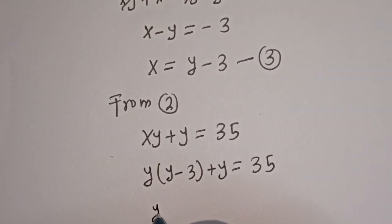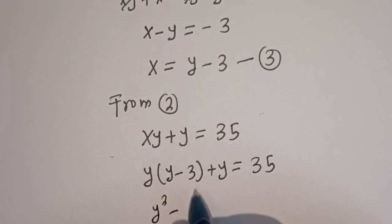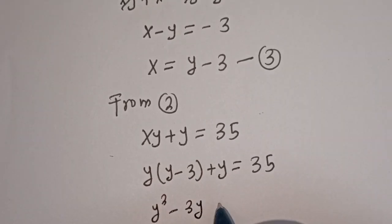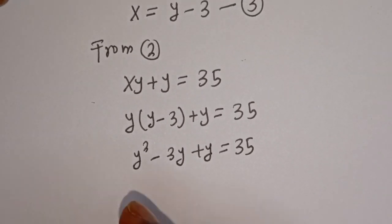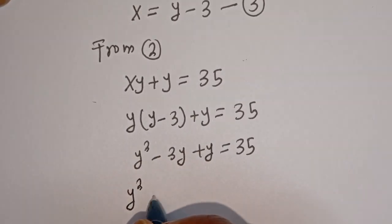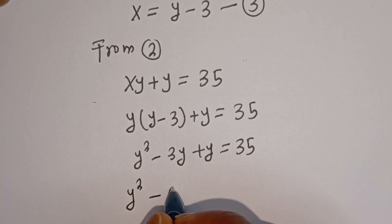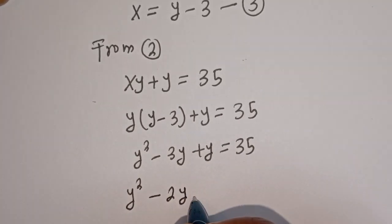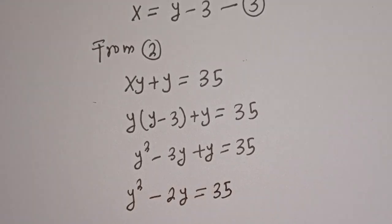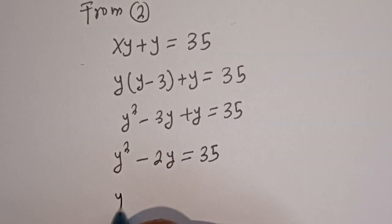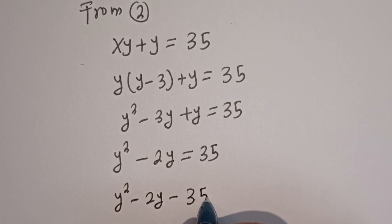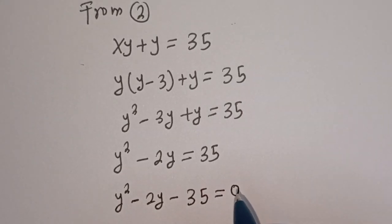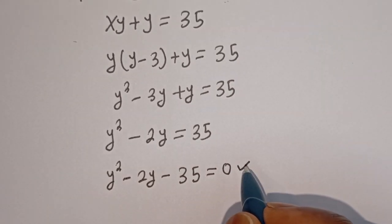Expanding: y times y is y squared, minus y times 3 is 3y, plus y. So we have y squared minus 3y plus y, which is minus 2y, equal to 35. Rearranging gives us y squared minus 2y minus 35 is equal to 0. This is a quadratic equation.